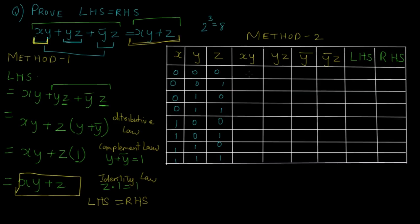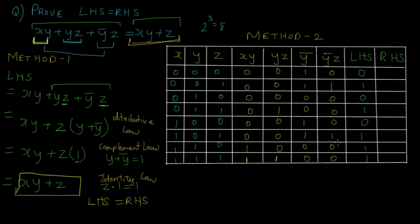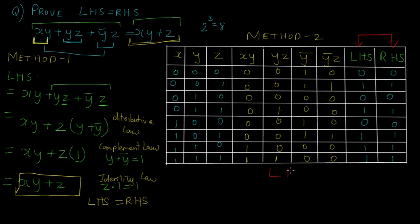I've calculated the intermediate values. For the LHS, I take an OR operation between X·Y, Y·Z, and Y complement·Z and calculate the LHS column. For the RHS, I take X·Y and Z and take an OR operation between these two values. Now comparing LHS and RHS for every case, LHS is always equal to RHS. Hence, by using Method 2 — the truth table method — we have proved that LHS equals RHS. These are the two basic methods to solve problems where you need to prove LHS is equal to RHS.